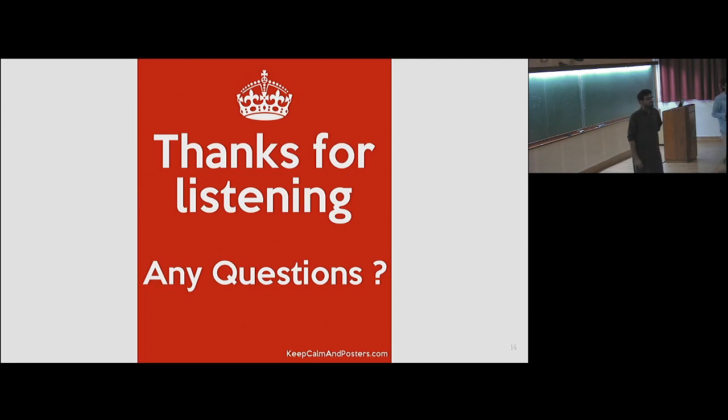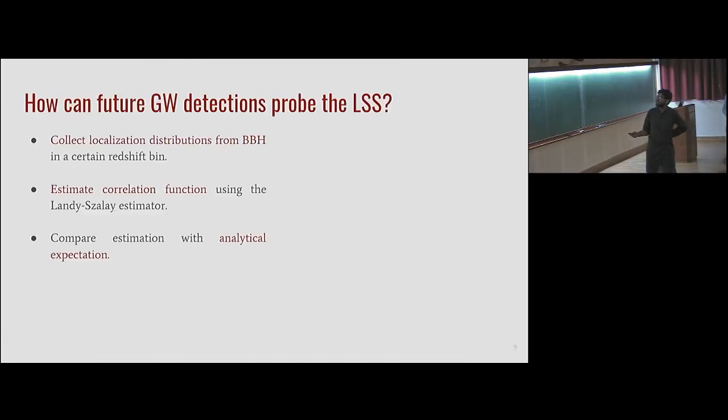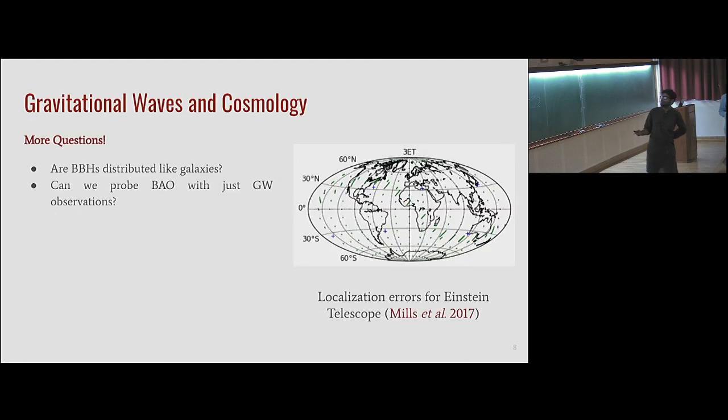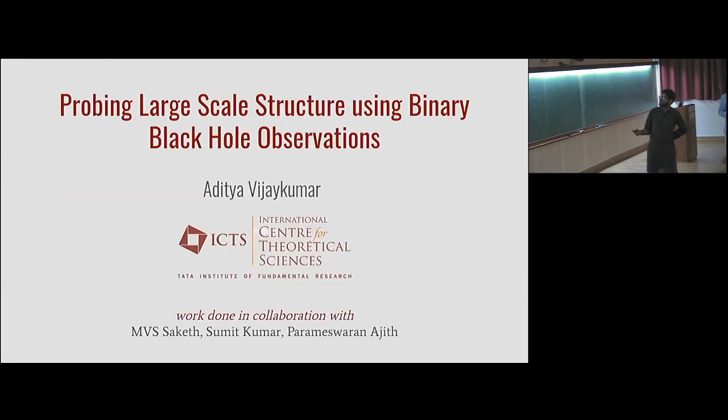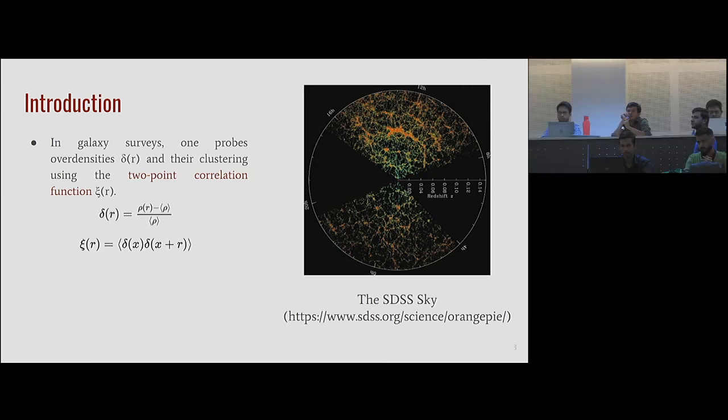Question: You showed a plot of some correlation function. What was the correlation function? Answer: The correlation function is defined like this, where Δ(r) is just the over-density in the universe. You model the universe as a fluid with some density ρ. You find the over-density as rho(r) minus average rho divided by average rho, and you define the correlation function as just the ensemble average of delta(x) times delta(x+r) over all x. Question: This is black hole density or? Answer: This is the cosmological matter density.